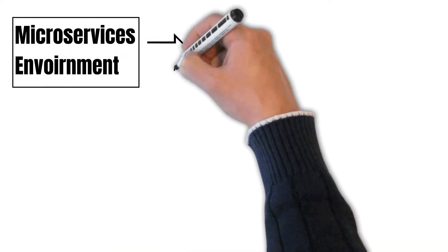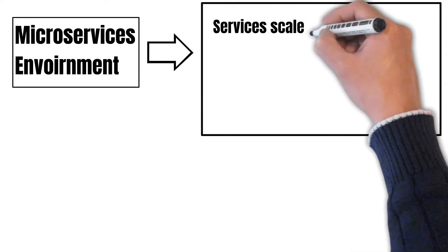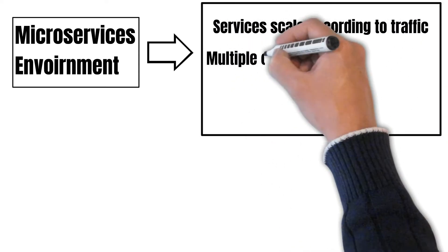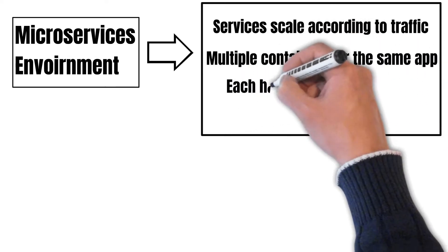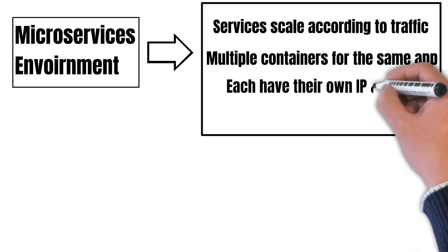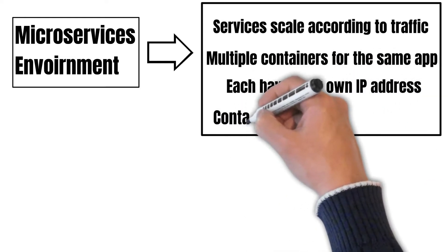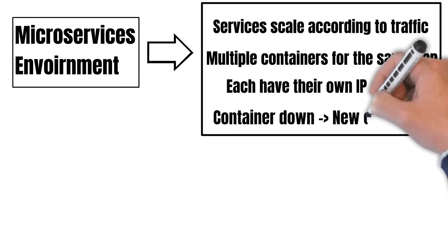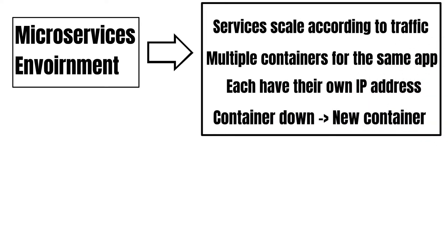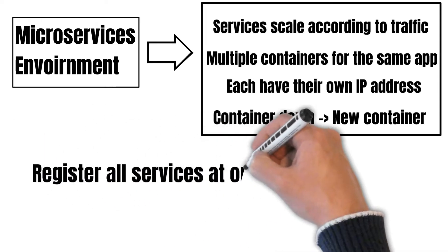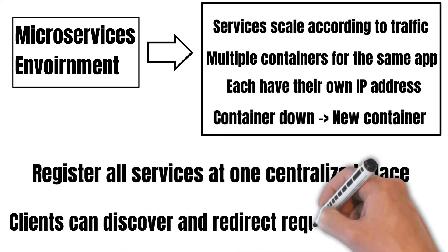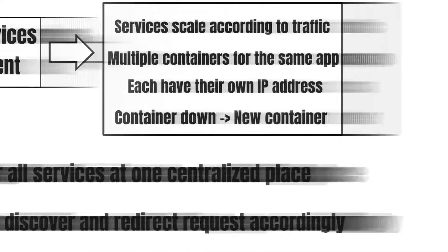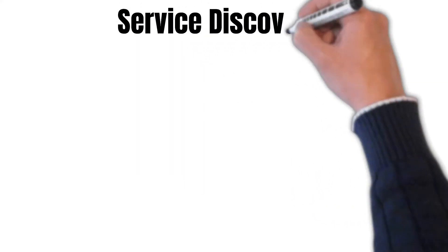In a microservices environment, services scale according to traffic, and there could be multiple containers for the same application. Each container will have its own IP address. Whenever a container goes down, a new container is created in its place, which will have its own new IP address. So there is a need to register all these services at one centralized place so that the clients can discover and call these services accordingly.